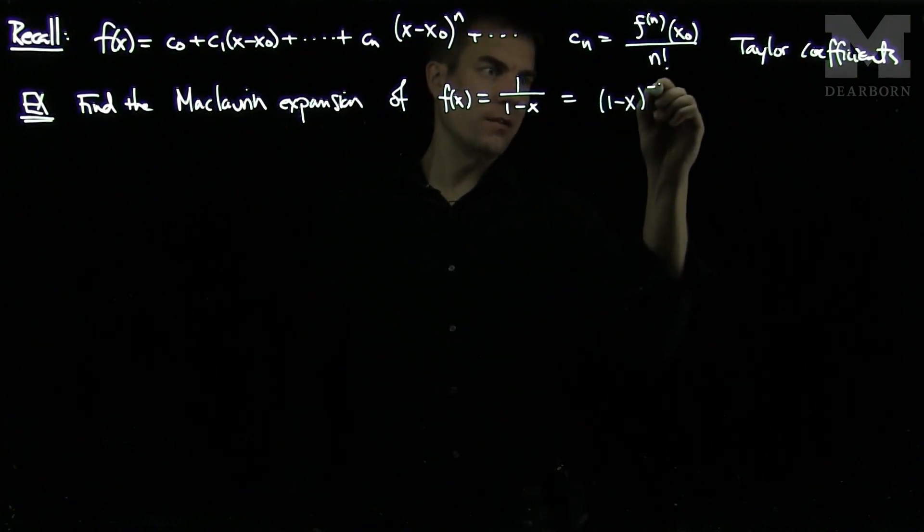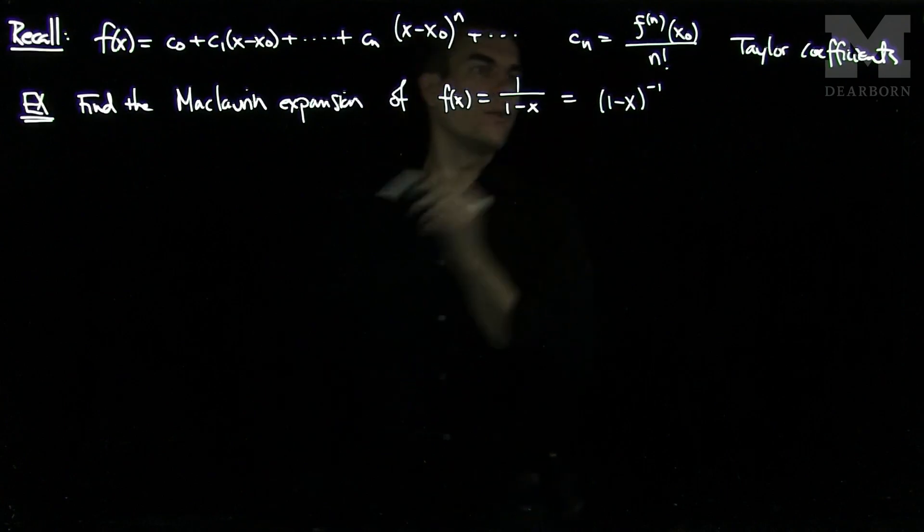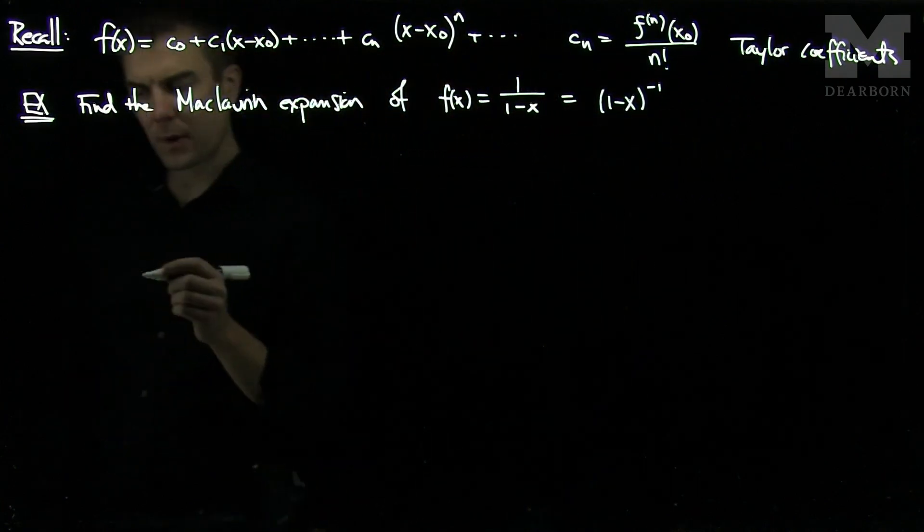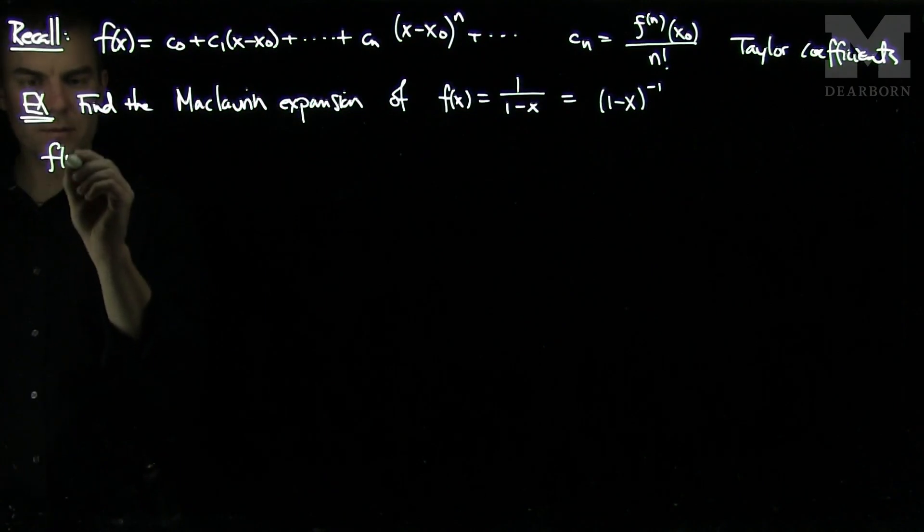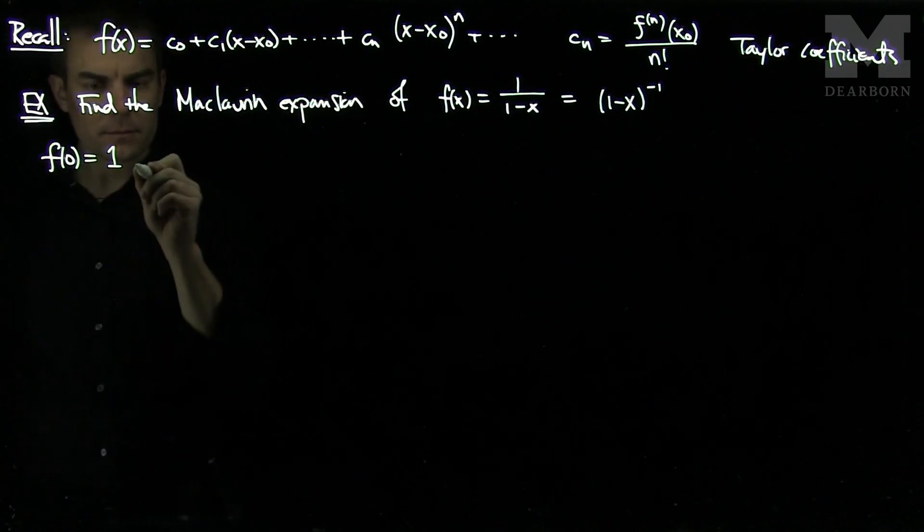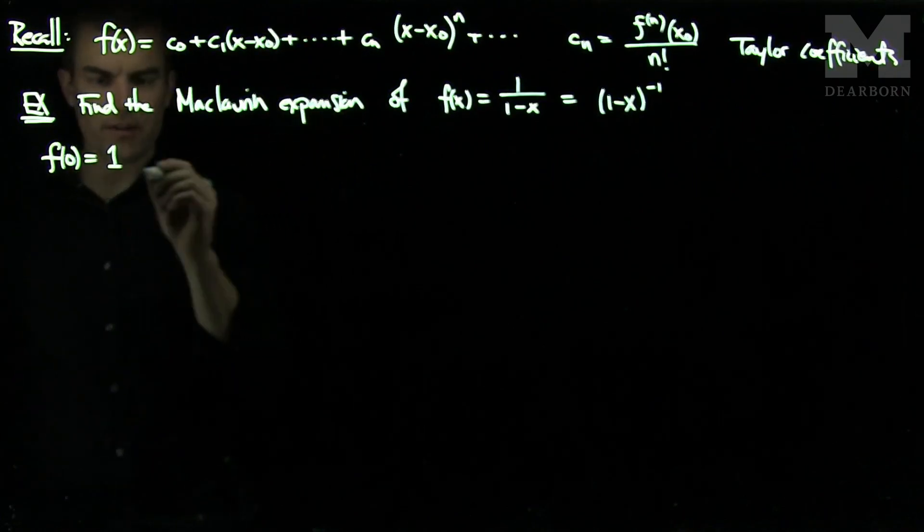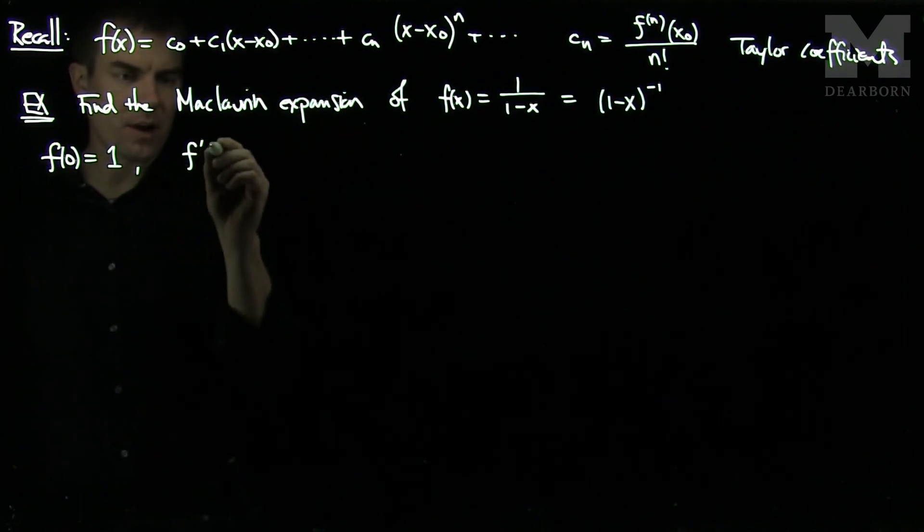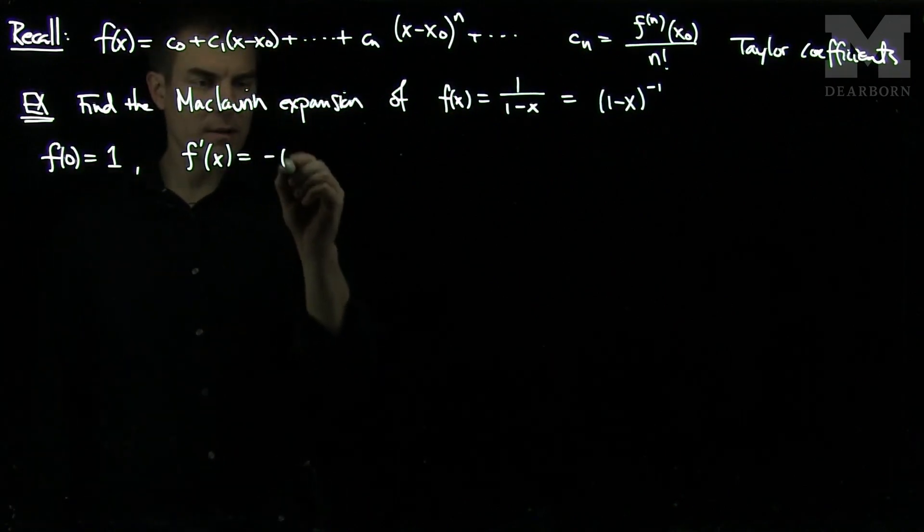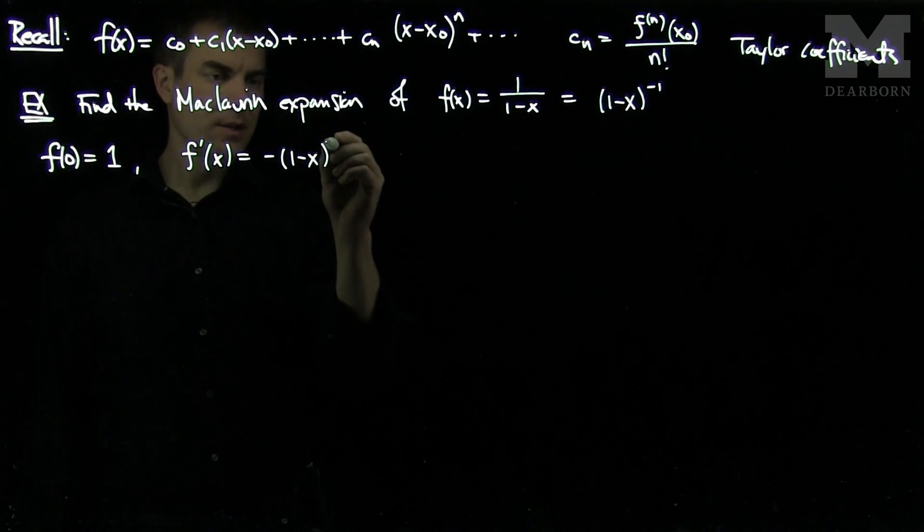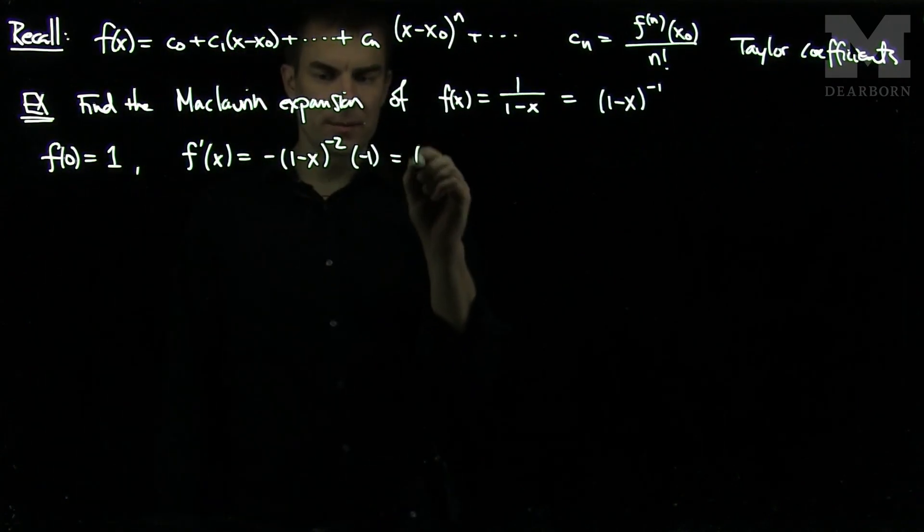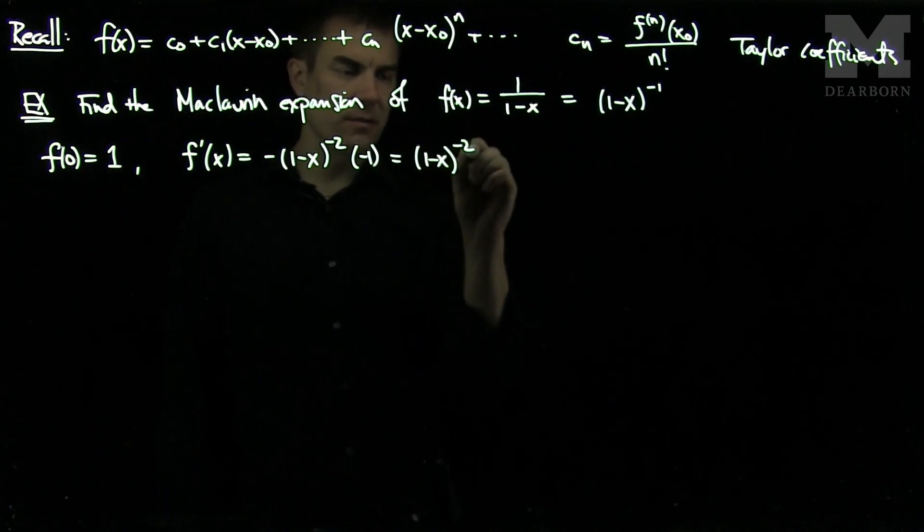So I need to compute all the derivatives of this function and plug in 0. So I know that f(0) is equal to 1. And then we need to compute f prime. So what's f prime going to be? f prime of x is going to be negative 1 times (1 minus x) to the negative 2 times negative 1. And so we see this simplifies to (1 minus x) to the negative 2.